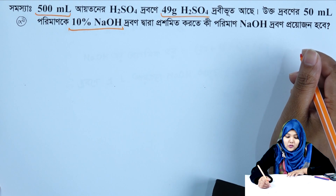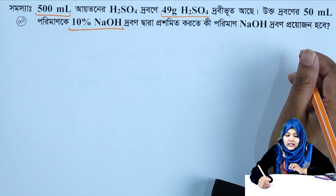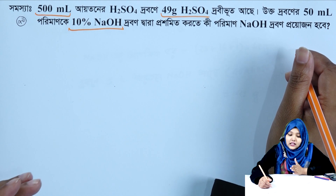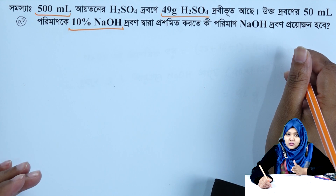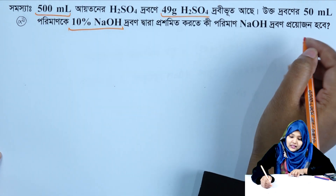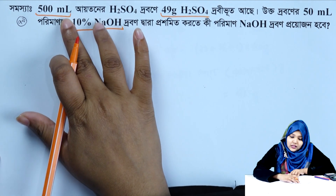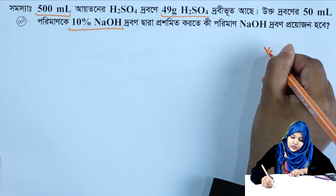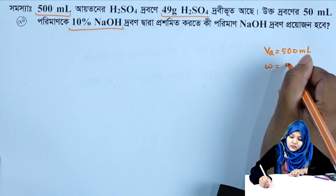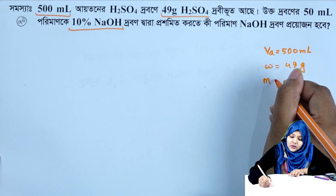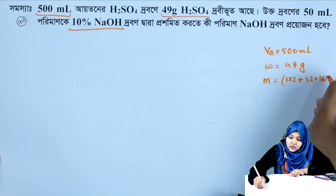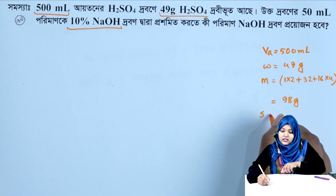Now for the second problem: finding the molar concentration of the acid. The volume of acid solution is 500 milliliters. Weight W equals 49 grams of sulfuric acid. The molecular weight M of sulfuric acid equals 2 times 1 plus 32 plus 16 times 4, which equals 98 grams per mole.